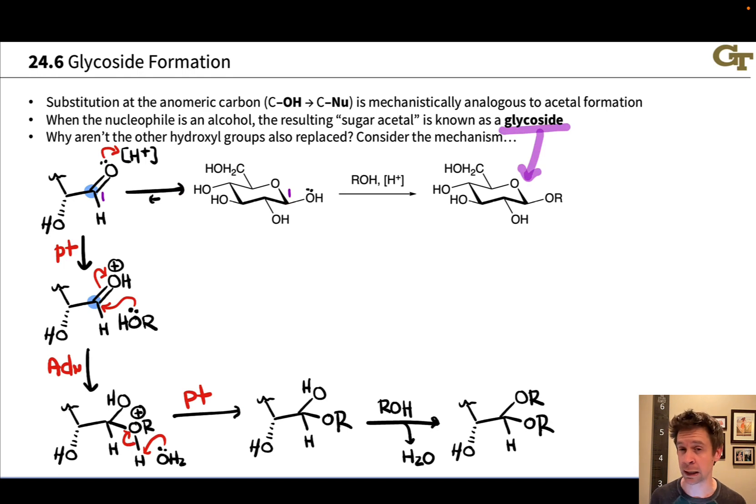So a glycoside really you can think of as an acetal of a monosaccharide. If we take a look at the general structure of a glycoside shown here, notice that we've converted a hemiacetal in the starting glucose here into an acetal. The OH group has been replaced with OR. And this kind of acetal formation from a cyclic sugar hemiacetal is known as glycoside formation. And this is known as a glycoside.